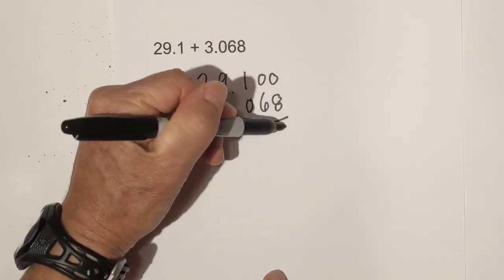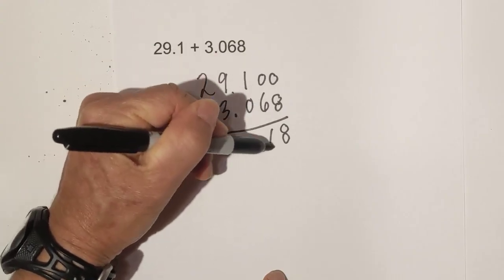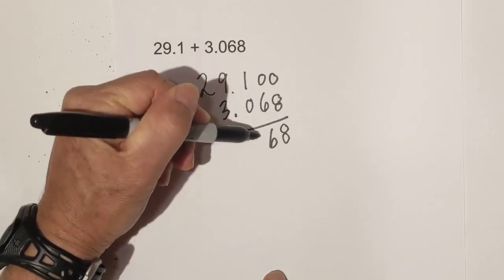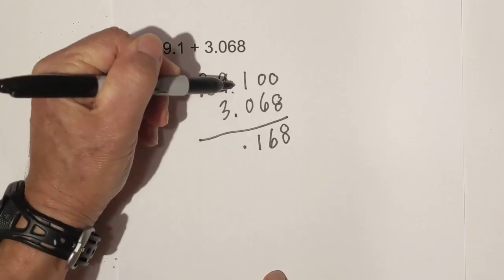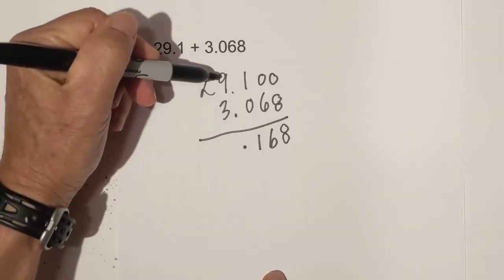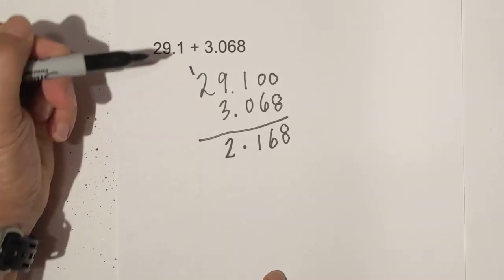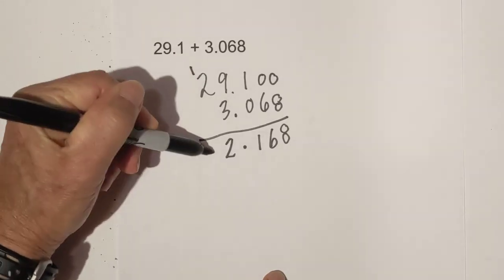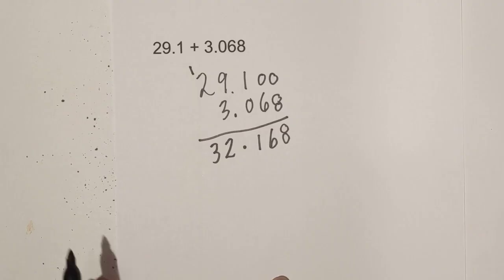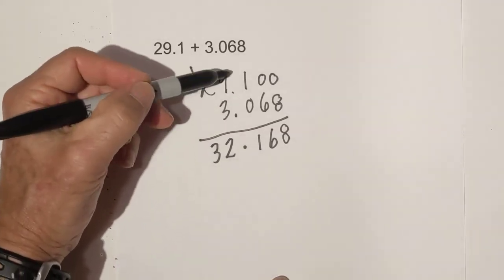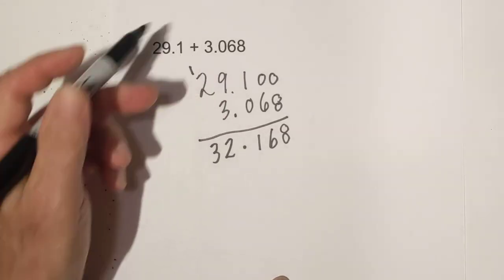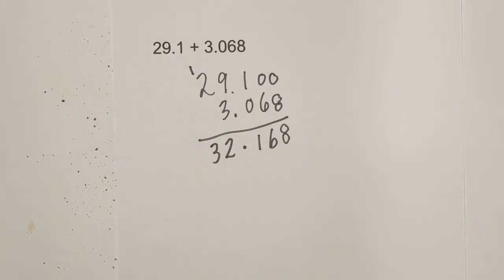Eight plus zero is eight. Six plus zero is six. One plus zero is one. So far that's pretty easy. Bring down the decimal point. Nine plus three is twelve, so I'm going to bring the one over here. Two plus one is three. In summary, for addition, you just line up the decimal points, add zeros to the right as needed, and then add. Now let's work on subtraction.